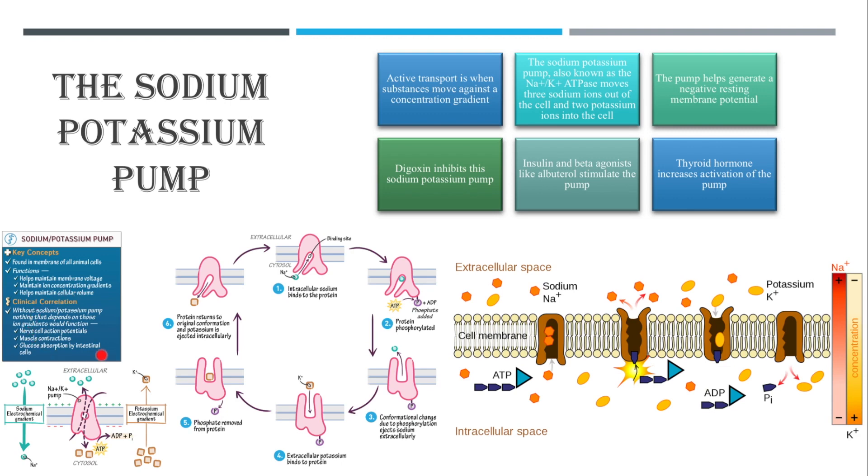So as shown here, this is why the sodium potassium pump is important. Without it there would be issues with the nerve cell action potentials, muscle contractions, as well as glucose absorption by the intestinal cells. It also helps the cell maintain its membrane voltage as well as maintain the cellular volume.